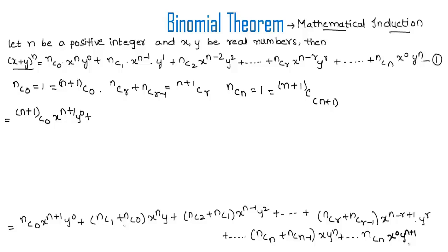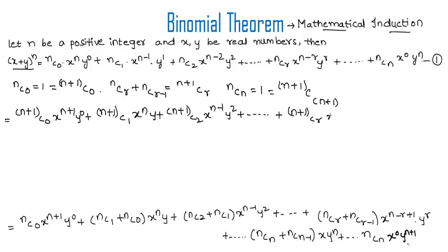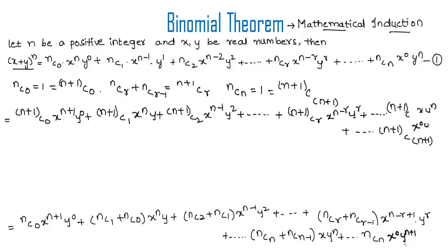Applying the formula: nC1 + nC0 = (n+1)C1, so we get (n+1)C1 · x^n · y. With r = 2: (n+1)C2 · x^(n-1) · y^2. In general: (n+1)Cr · x^(n-r) · y^r. For the previous-to-last term: nCn + nC(n-1) = (n+1)Cn · x · y^n. And nCn becomes (n+1)C(n+1) · x^0 · y^(n+1).